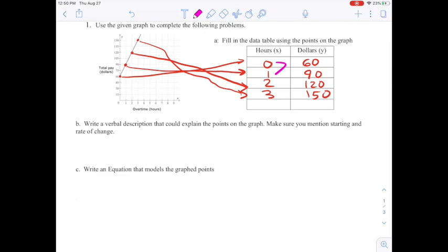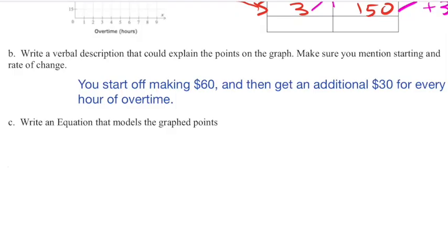The change is how much we're going up or down over a consistent amount of time. So every time these X's are going up by one, how are our Y's changing? Well, they're going up by 30, up by 30. So it looks like you get an extra $30 for every one hour of overtime work. And that's what we're going to write in our verbal description. So I said you start off by making $60 and then get an additional $30 for every hour of overtime.